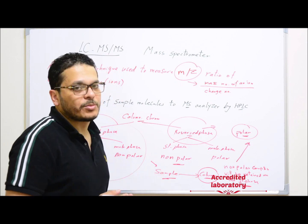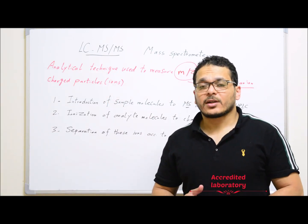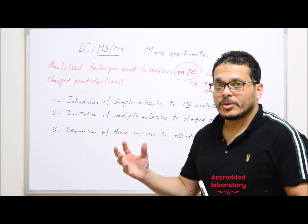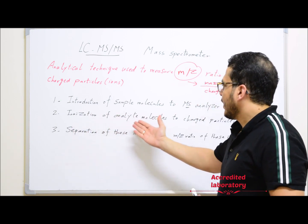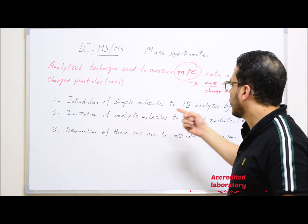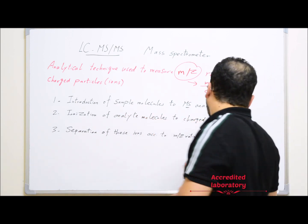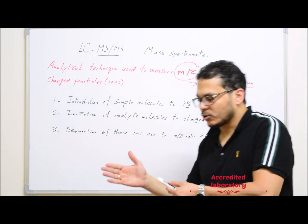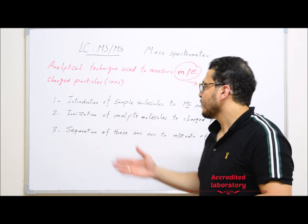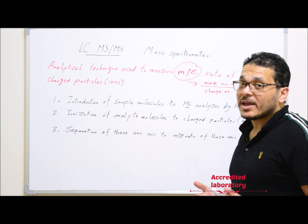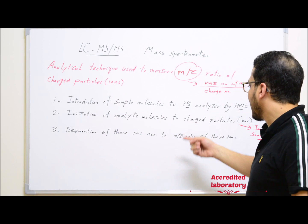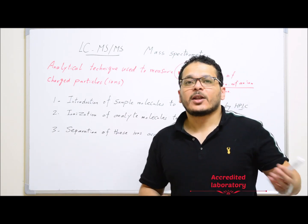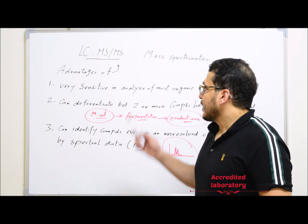After samples are introduced to the mass analyzer by HPLC and separated according to polarity into polar and non-polar molecules, these molecules will be transferred to the mass analyzer. They will first be ionized — neutral analyte molecules are converted to charged particles or ions by the ion source. These ions will then be separated by the mass analyzer according to their mass-to-charge ratio, allowing identification of the chemical structure and elemental composition of the mixture.